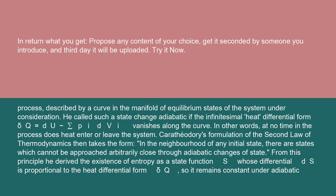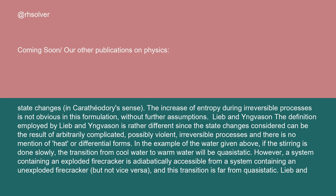Karathiodori's formulation of the second law of thermodynamics then takes the form: In the neighborhood of any initial state, there are states which cannot be approached arbitrarily close through adiabatic changes of state. From this principle, he derived the existence of entropy as a state function S whose differential dS is proportional to the heat differential form delta Q, so it remains constant under adiabatic state changes in Karathiodori's sense. The increase of entropy during irreversible processes is not obvious in this formulation, without further assumptions.